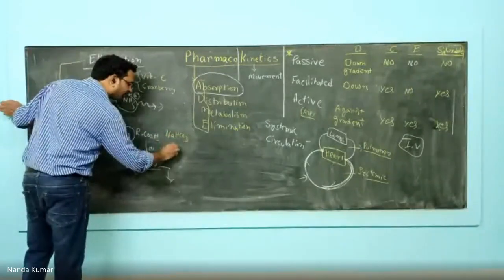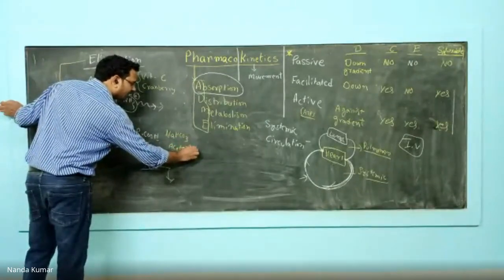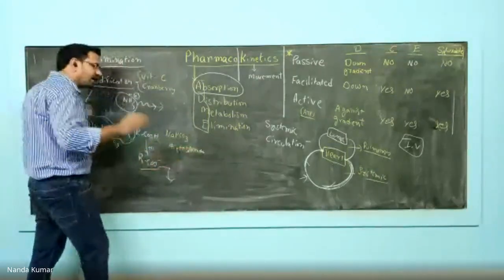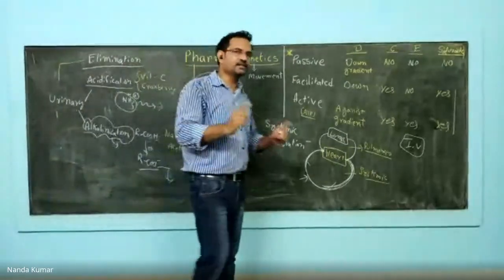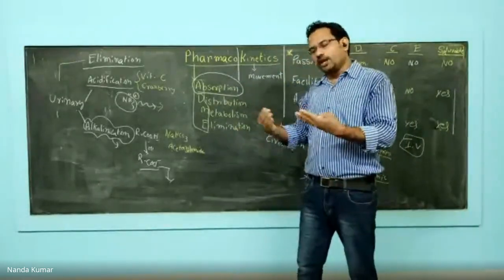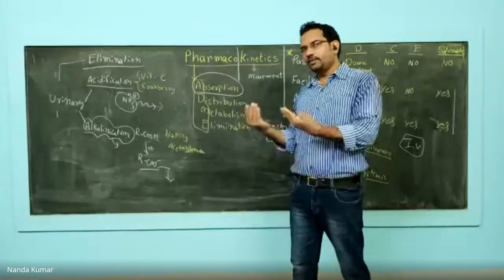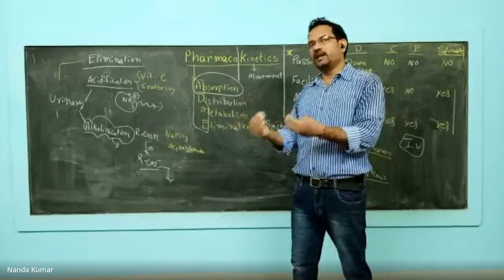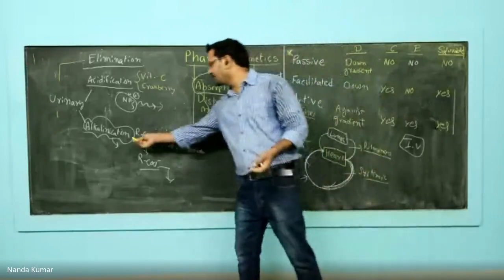Sodium bicarbonate and acetazolamide - acetazolamide is a drug which belongs to diuretic category, carbonic anhydrase inhibitor. When people take acetazolamide it increases urinary pH, increasing urinary pH means converting into basic pH.